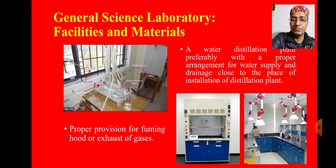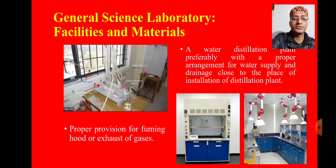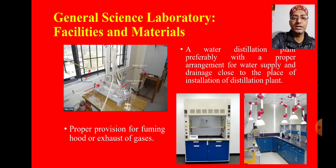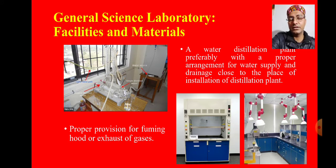In some laboratories, there are proper provisions for a fuming hood and exhaust of gases, which are needed when heating chemicals that produce fumes or gases. Generally, fuming hoods and gas exhausts are found at higher levels, such as in Class 11 or 12 standard labs. But even at lower levels, if you have a science lab, there must be a provision for a fuming hood or exhaust of gases.